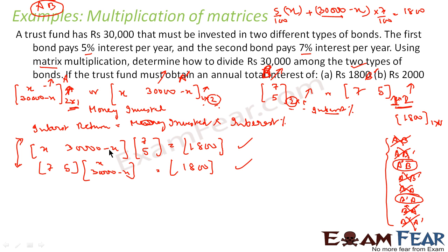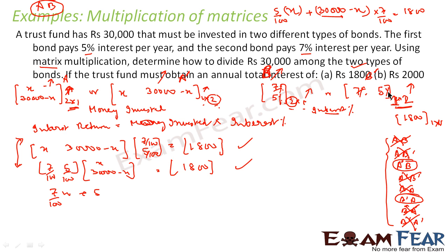Let me take the second valid option. This gives: 7/100 × x plus 5/100 × (30,000 minus x) equals 1,800. Please note that 7 and 5 are percentages, so everything is divided by 100.